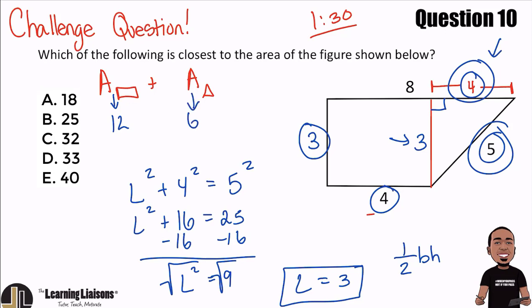So there it is. Boom. We are all good. 12 plus six gives us 18. And there we go. There's our answer choice. And we are all set.